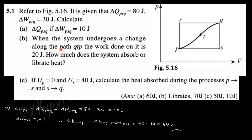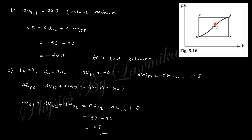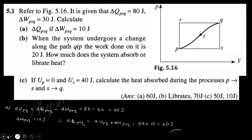Next part: when the system undergoes a change along path PTQ, the work done is 20 joules — but this volume is reduced, so the work done is negative (−20 joules). The heat equals delta U + delta W = 50 + (−20) = −70 joules. The negative sign means heat is released by the system along this path.